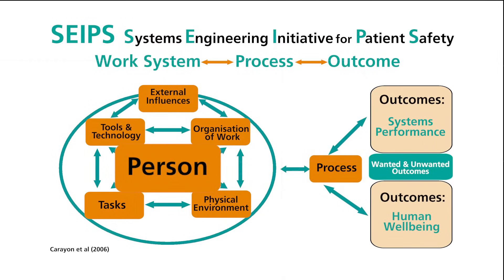Person or persons in this model is one of several components and is not separable from the socio-technical system. They are deliberately placed in the centre of the system, as this fits with the human factors approach. The person can be an individual professional, such as a healthcare professional, as well as a non-professional individual, such as a patient or family caregiver. The person component can also be a collective of teams or individuals, such as ward teams, family units, or communities.